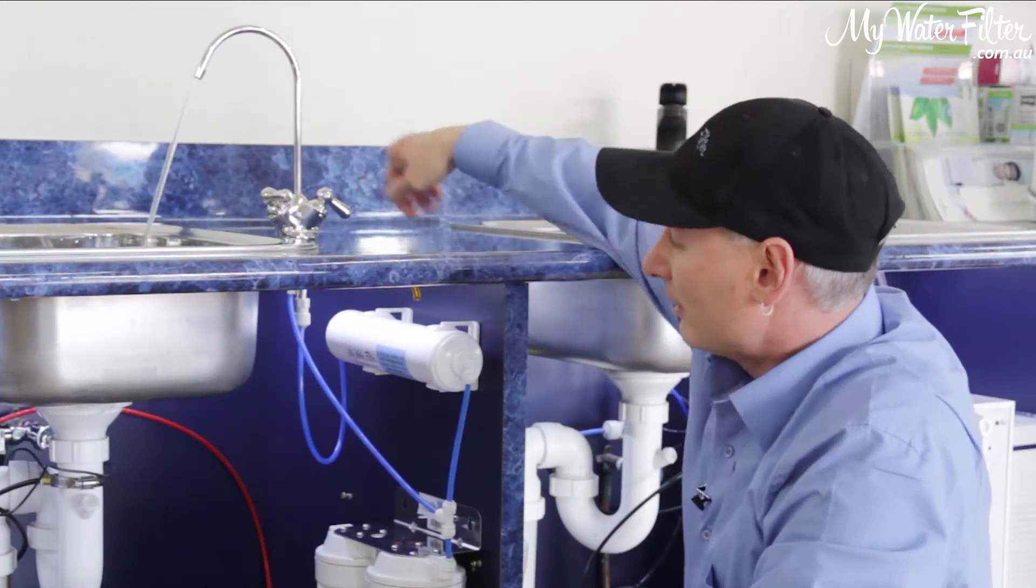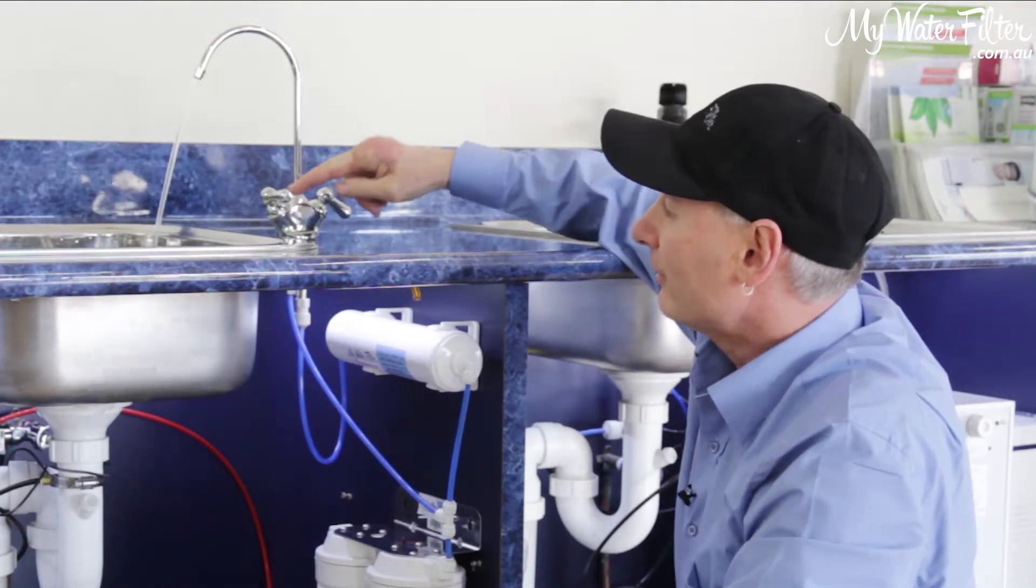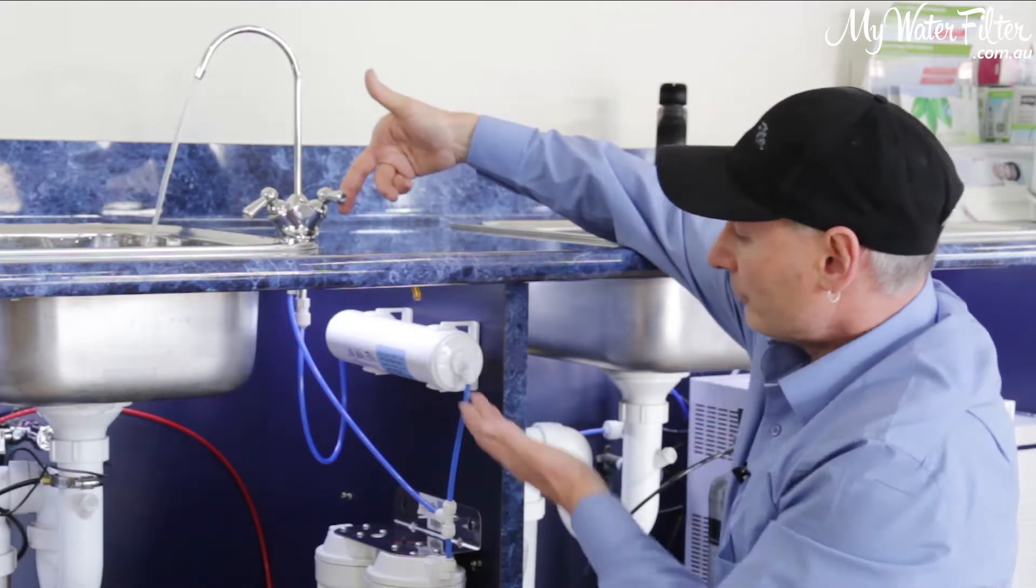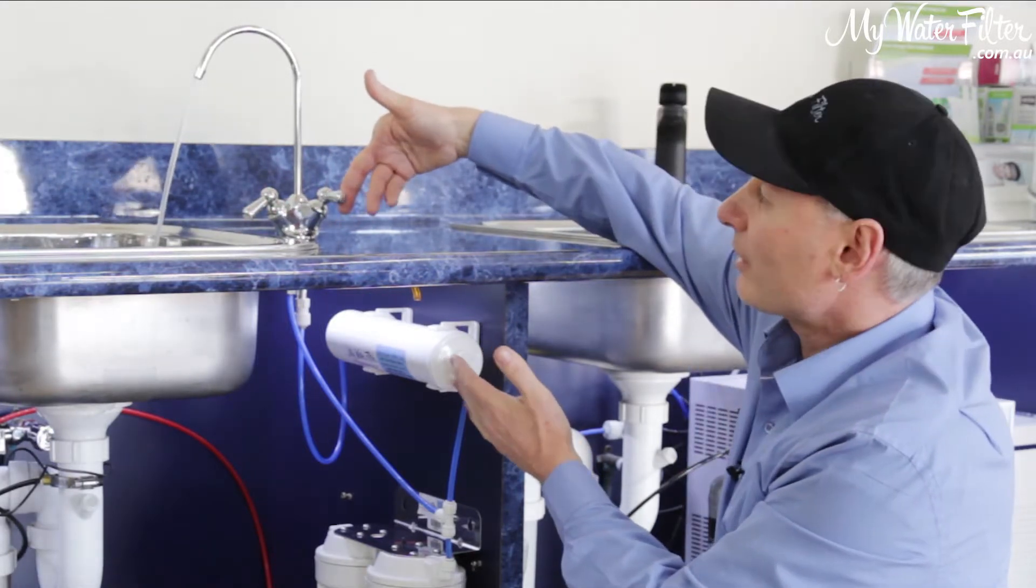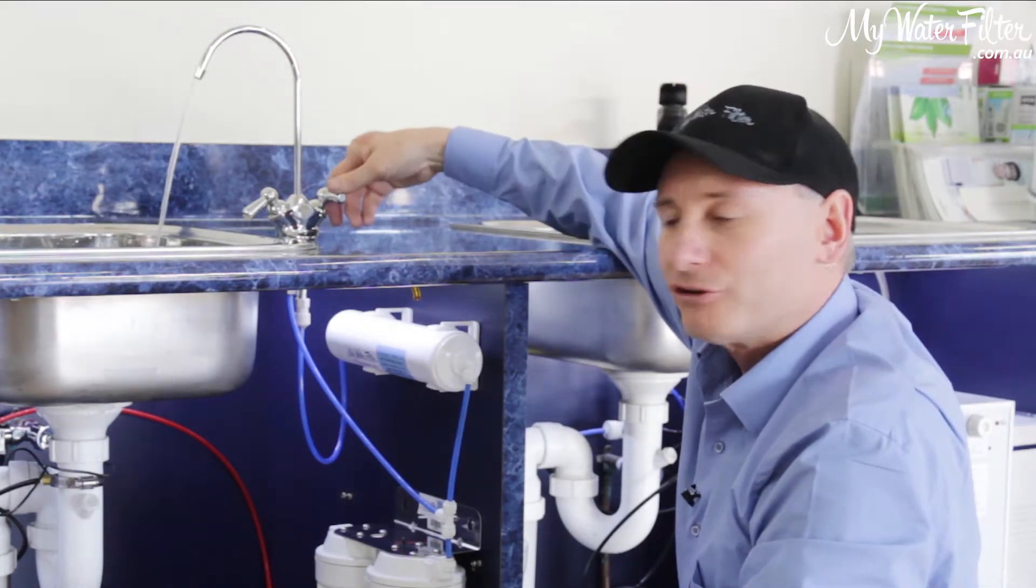This one here is just normal, beautiful filtered water like you've always had. You can turn that off, and then we flip this one on, it's going through the alkalizer, and we've got eight to nine pH water flowing out of the other side.